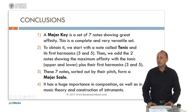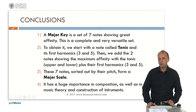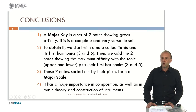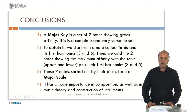As conclusions: a major key is a set of seven notes showing great affinity among them — a complete and very versatile set. To obtain it, we started with a note called the tonic and looked for its first harmonics. Then we went to the most important note from the tonic and looked for its first harmonics. Then we chose a note lower than the tonic such that its third harmonic is precisely the tonic, and looked for its first harmonics. With those notes we formed the major key, and if we sort them by pitch, we form the corresponding major scale. The major scale has a huge importance in composition, music theory, and the construction of instruments.